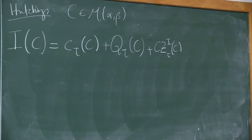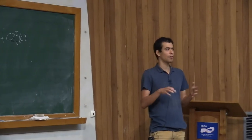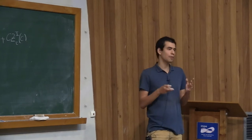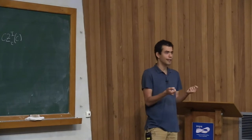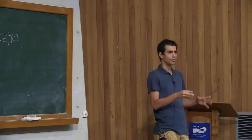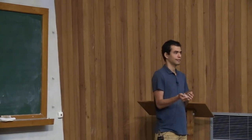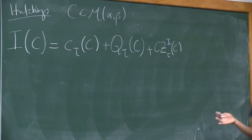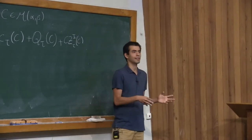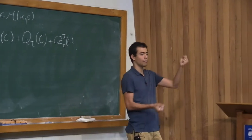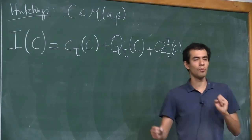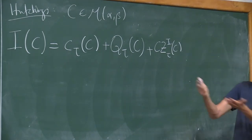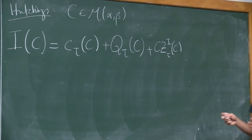In the 90s, Taubes proved that the Seiberg-Witten invariant of a symplectic four-manifold equals a count of holomorphic curves — specifically those with a certain topological index equal to zero, making them rigid and countable. Then Hutchings in the 2000s wanted to do the same in a categorified way in three dimensions, comparing with Seiberg-Witten homology as studied by Kronheimer-Mrowka, and he wrote down this ECH index.